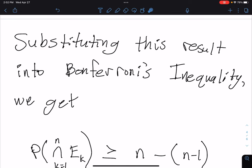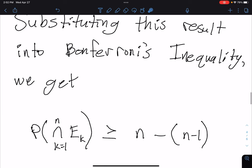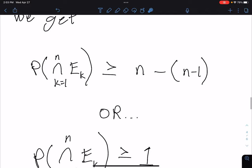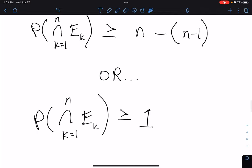Now substituting this result into Bonferroni's inequality, we get a much simpler inequality which is just probability of the intersections of all these events is greater than or equal to N minus N minus 1, or simplified, probability of the intersections is greater than or equal to 1.